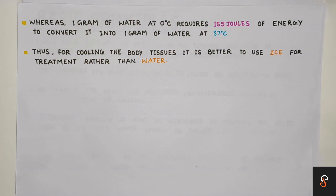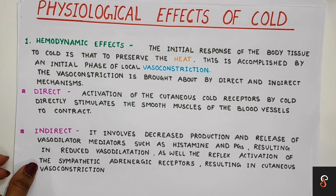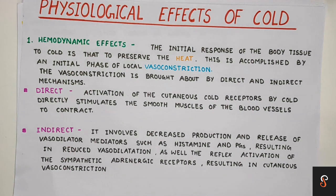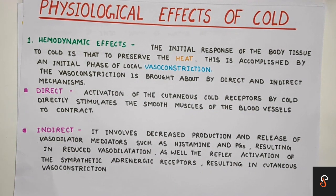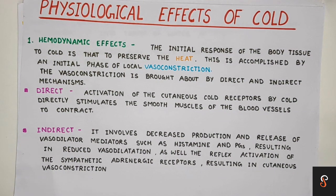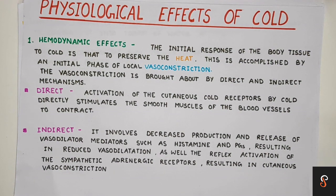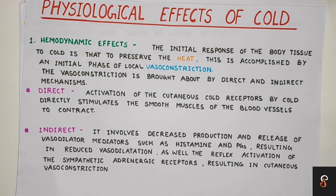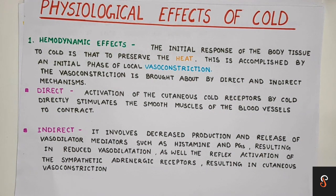Next we will see the physiological effects of cold therapy. The first is the hemodynamic effect. When cold is applied to body tissue, the body's first response is to preserve heat — to maintain the amount of heat in an unaltered condition. The body preserves heat by an initial phase of local vasoconstriction, meaning a decrease in the diameter of blood vessels. Vasoconstriction restricts blood flow to the skin so that heat loss is minimized. Due to cooling, blood viscosity increases, which increases resistance to blood flow, thereby preventing heat loss.